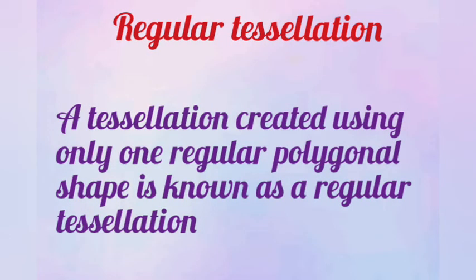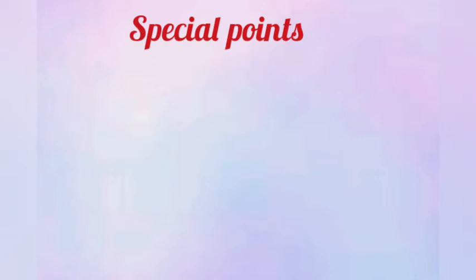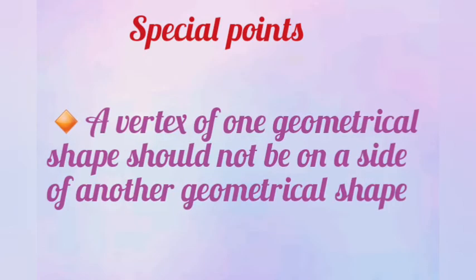What is a regular tessellation? A tessellation created using only one regular polygonal shape is known as a regular tessellation. There are some special points we have to consider when creating regular tessellations. A vertex of one geometrical shape should not be on a side of another geometrical shape.